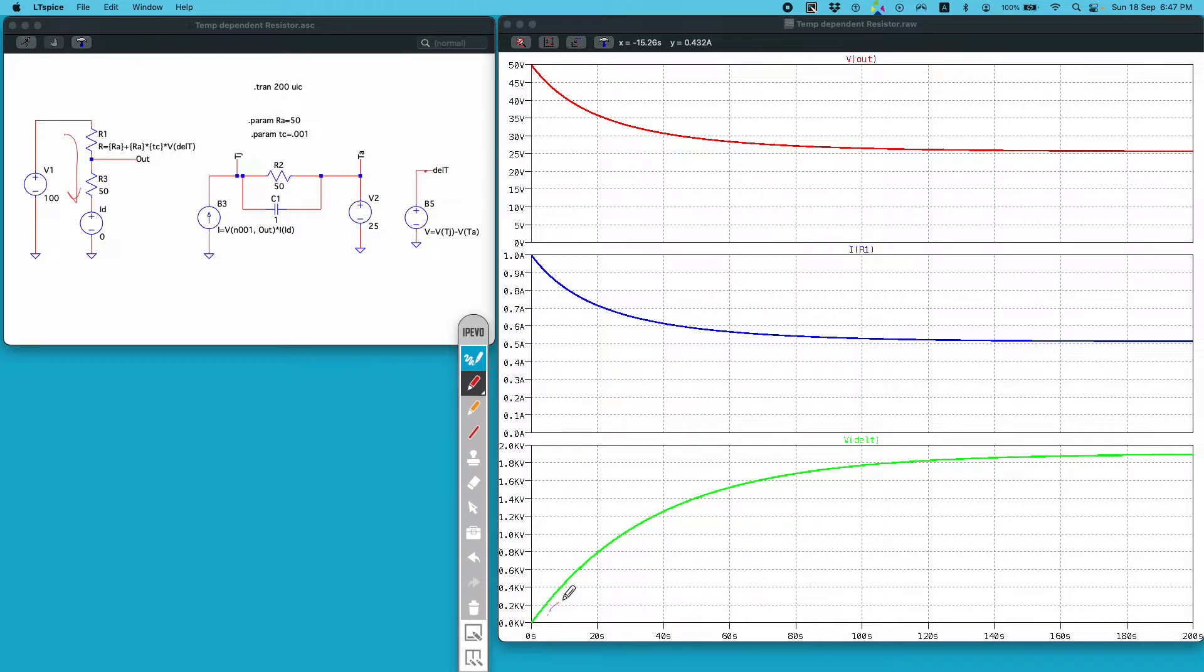You can see here my delta T is increasing during the initial stage of the simulation and after a certain time interval it stabilizes. This circuit has certain time constant.